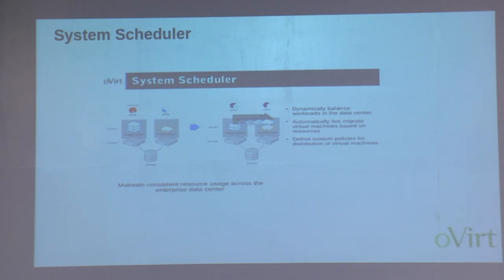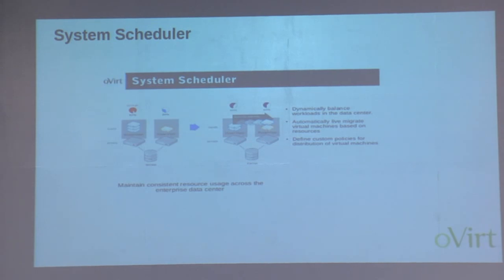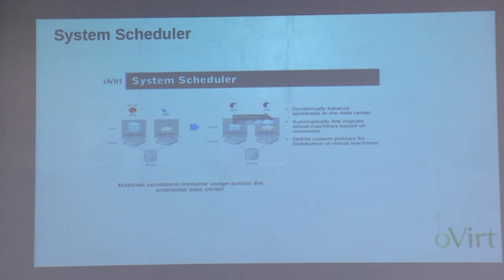The system scheduler: in the picture you can see one node is at a critical stage, reaching 90% CPU load. The system scheduler will try to balance the load across all hosts in the cluster. It will move certain load to other nodes — for example, if another node is at 30%, it will move load and maintain roughly 60% across both. In this way the system scheduler maintains workload balance.